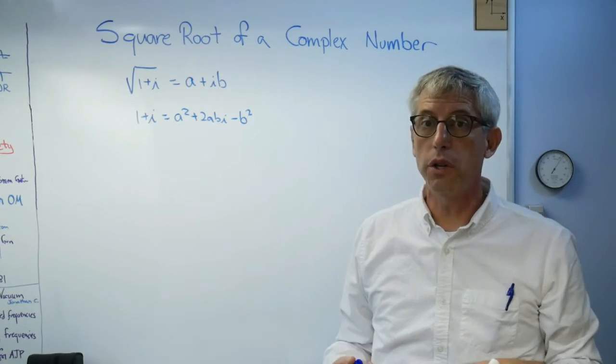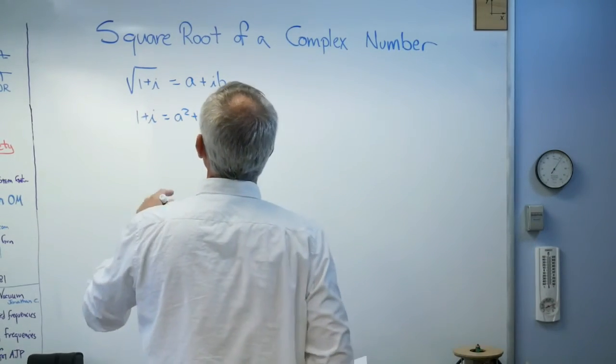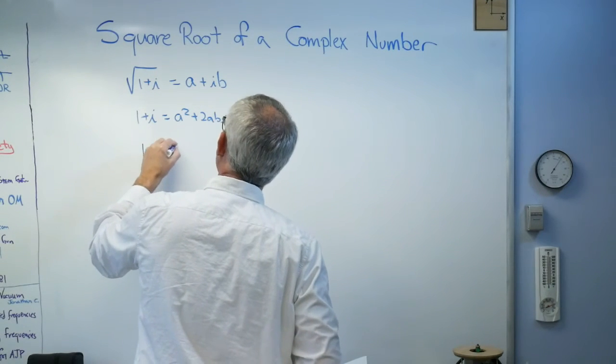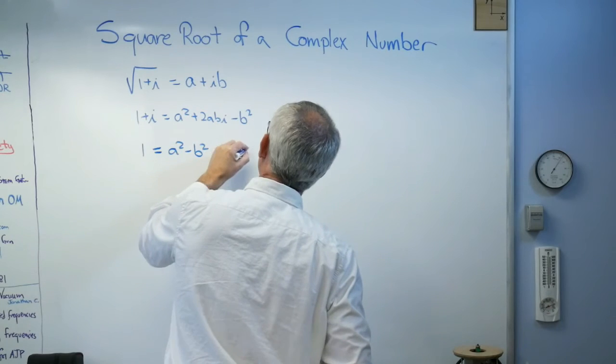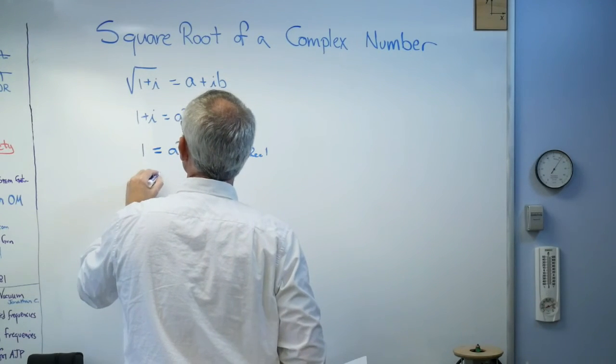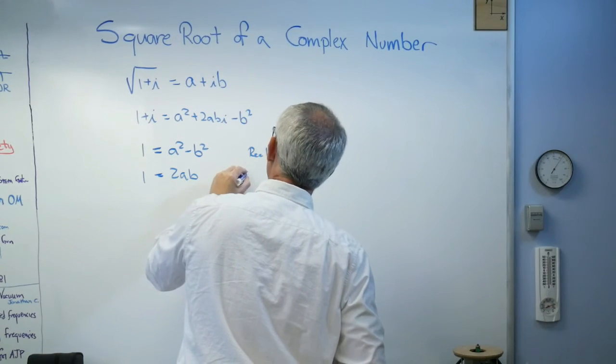Now, you see how this works? Once you know the process, it works for all numbers. This is nice. So let's gather the real terms. One now has to equal a squared minus b squared. That's the real term. And the imaginary term is also one. It's equal to 2ab.